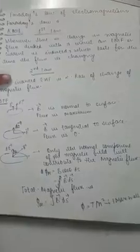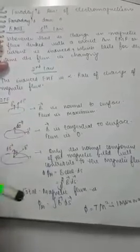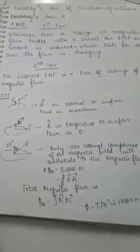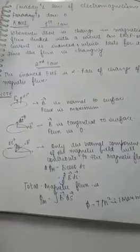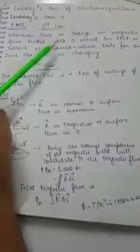Hello guys, welcome to our channel Juvenile Spot. Today's topic is Faraday's Law of Electromagnetism. From the conclusion of Faraday's experiment, we have found that as we have magnetic flux change, we have current and EMF induced, and it will last until the magnetic flux changes. On this basis, there are two laws of Faraday's law. The first: whenever there is a change in the magnetic flux linked with a circuit, an EMF or current is induced, which lasts for the time the flux is changing.